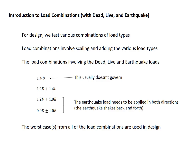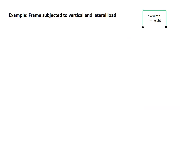In this example, we'll take a simple portal frame subjected to vertical and lateral load. The frame is shown to the right. It's a portal frame with a pin at one end and a roller at the other, a width B and a height H.